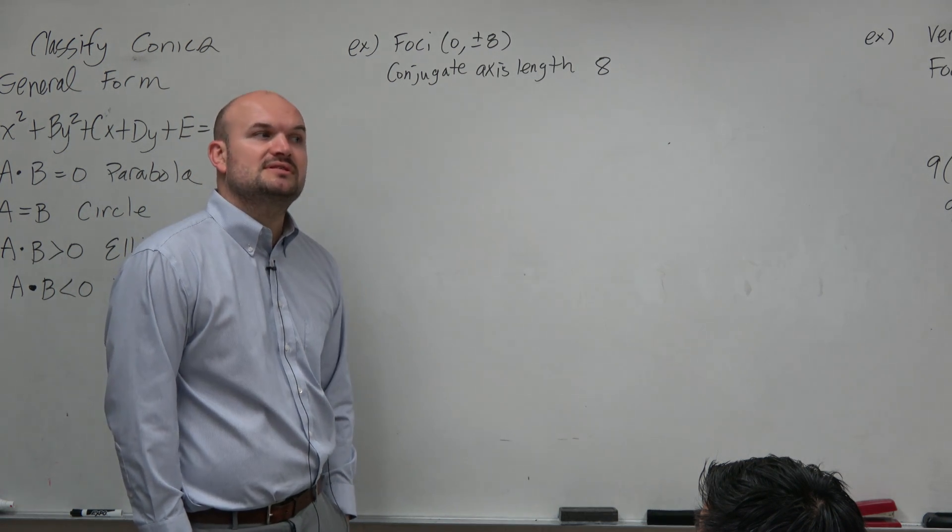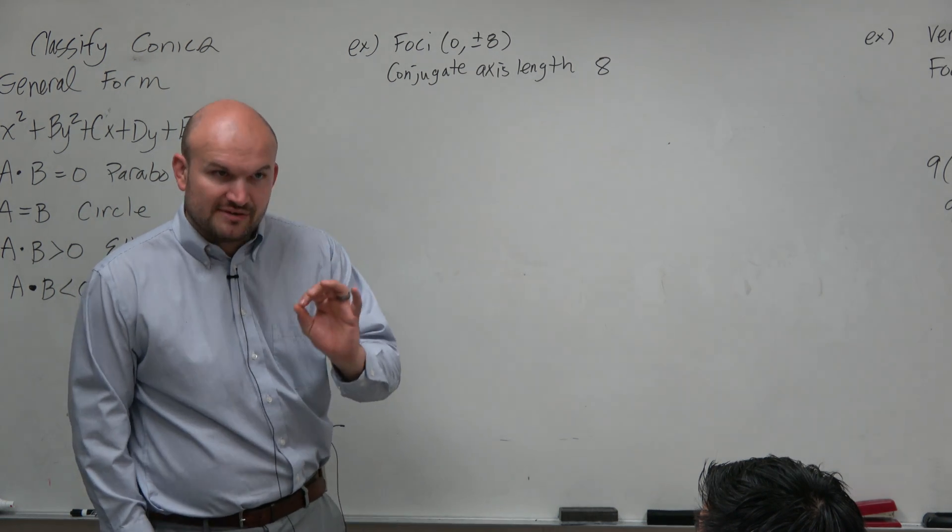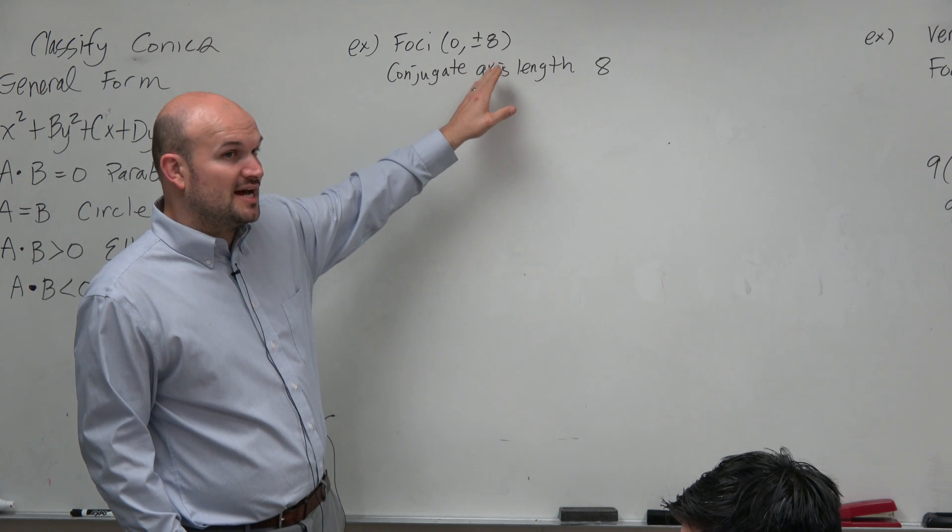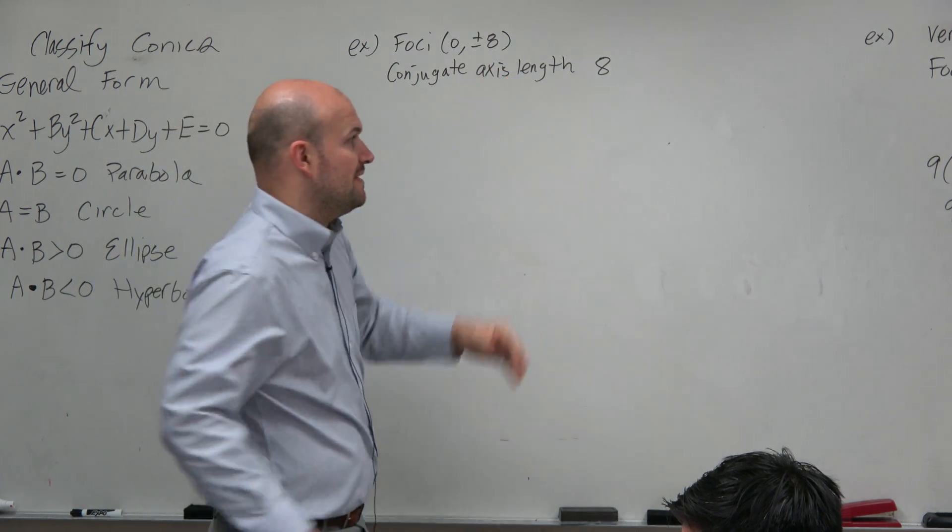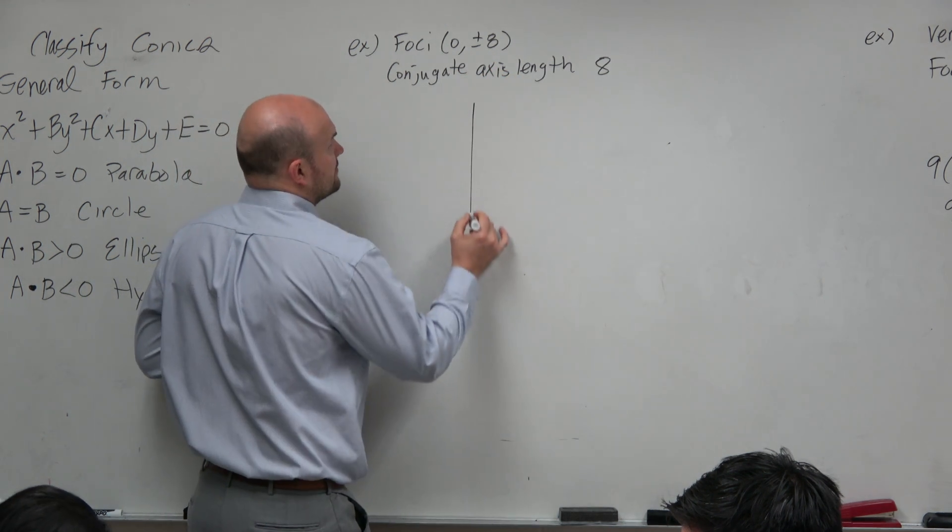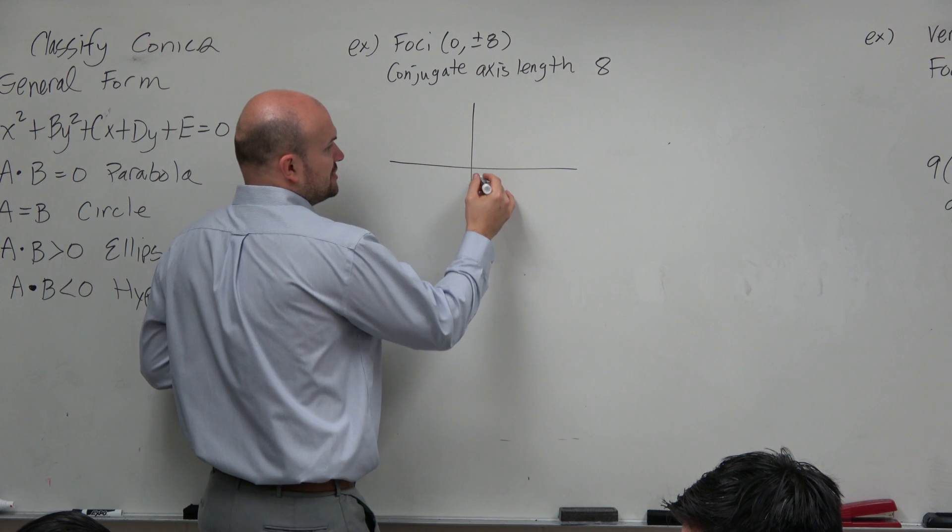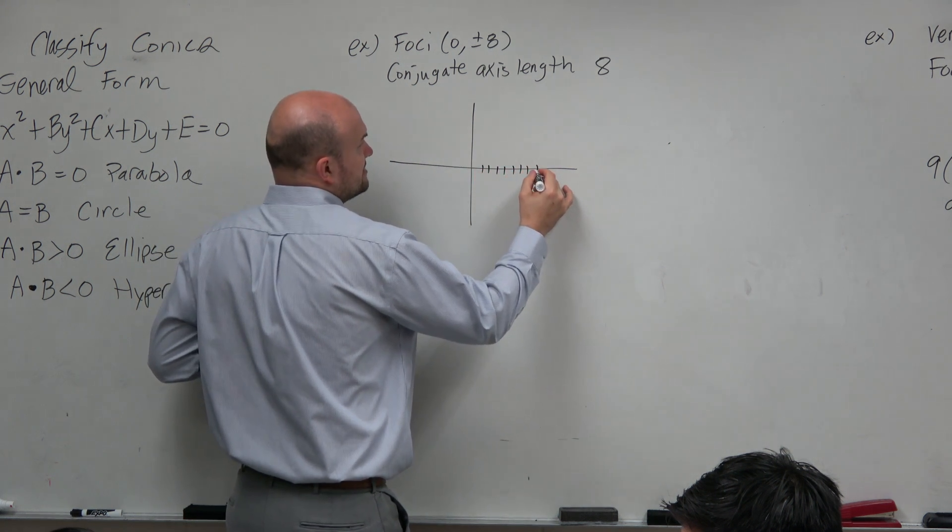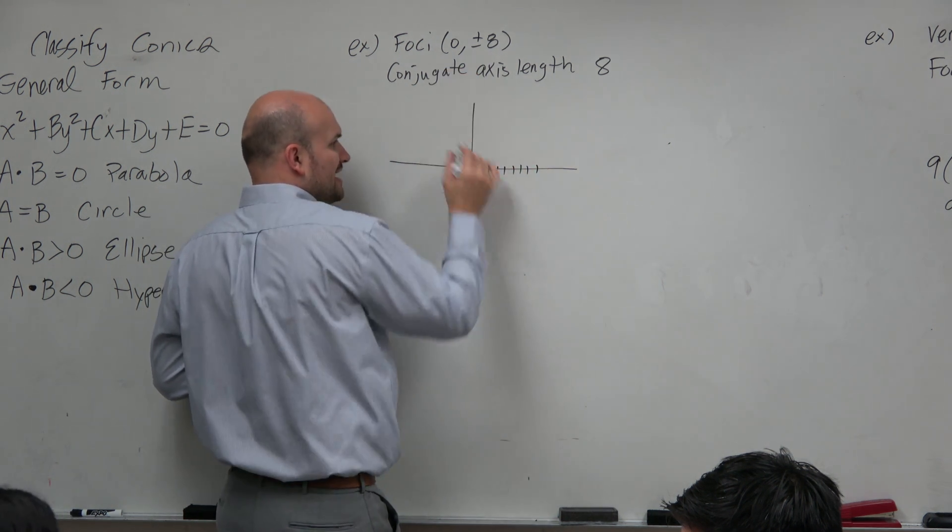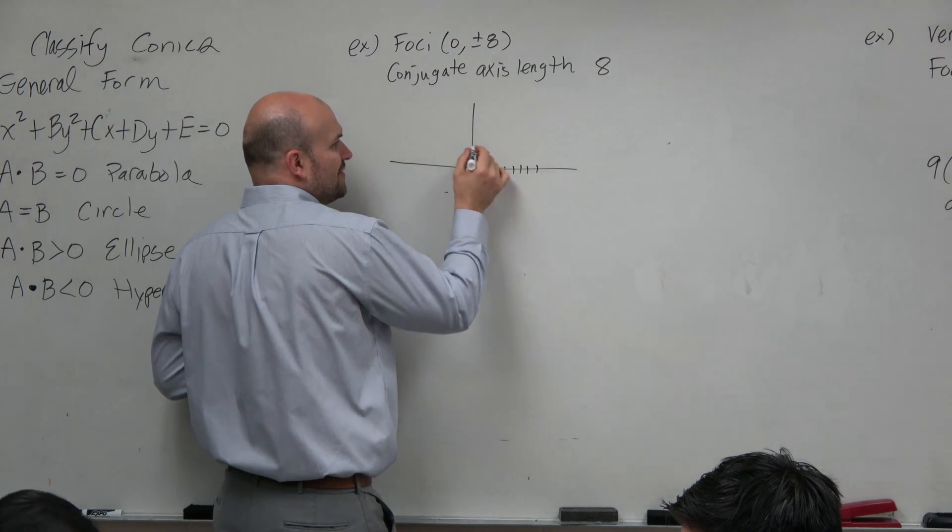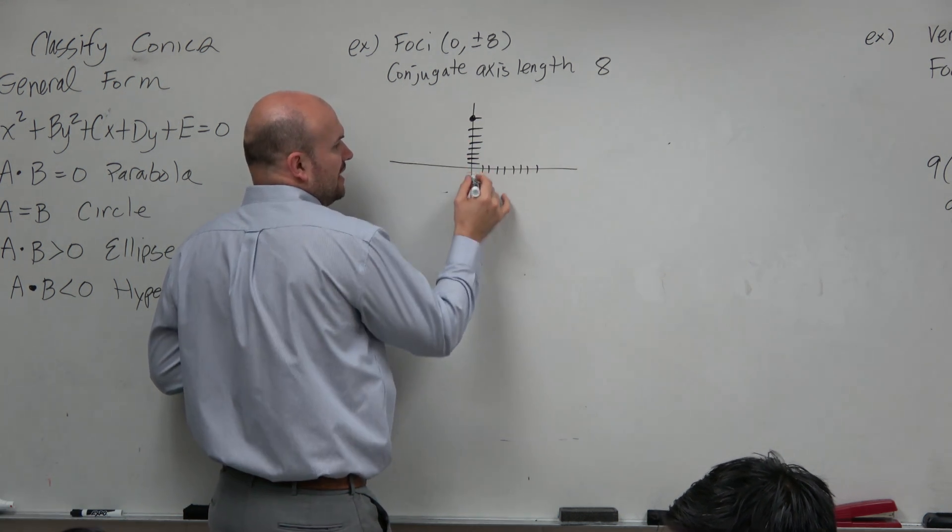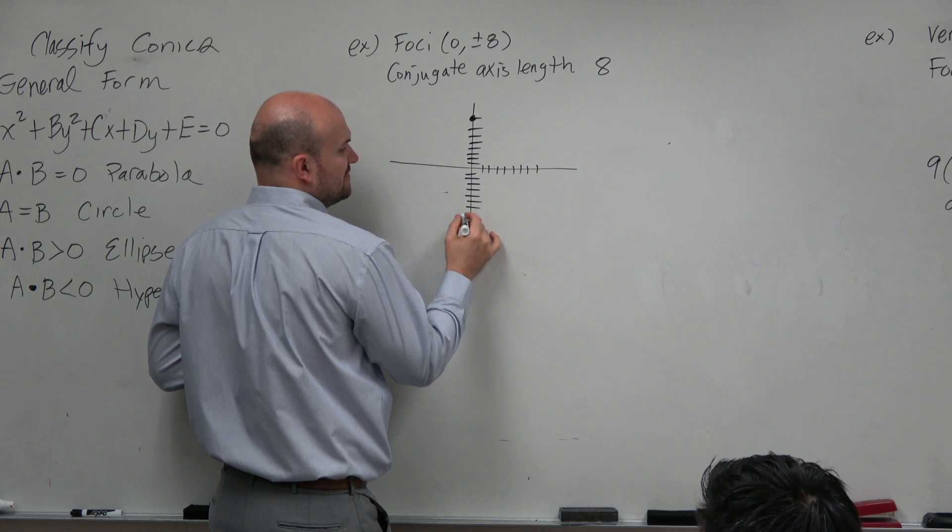And the process was, first step was always to sketch the information. You notice, guys, I have two points. So let's plot that information and see what we can come up with. So by plotting the information, 1, 2, 3, 4, 5, 6, 7, 8. That's wrong. That's (0, 8). It's up and down, right? 1, 2, 3, 4, 5, 6, 7, 8. And 1, 2, 3, 4, 5, 6, 7, 8.